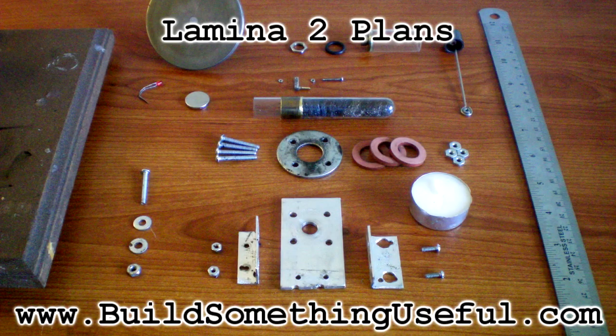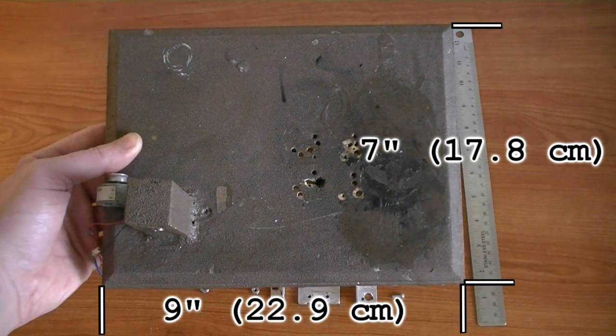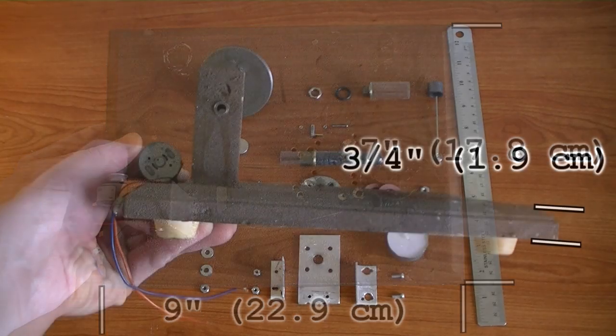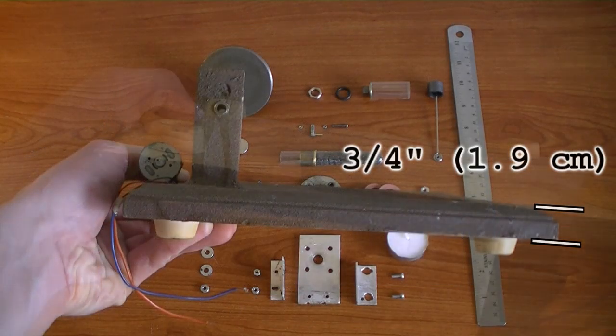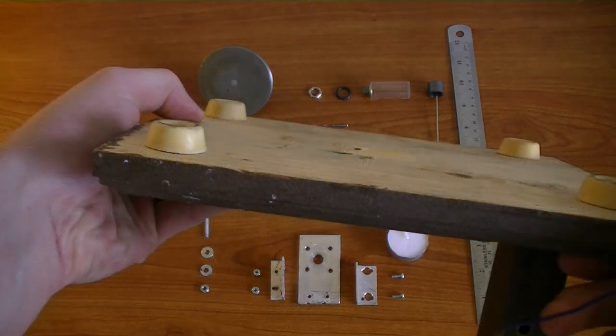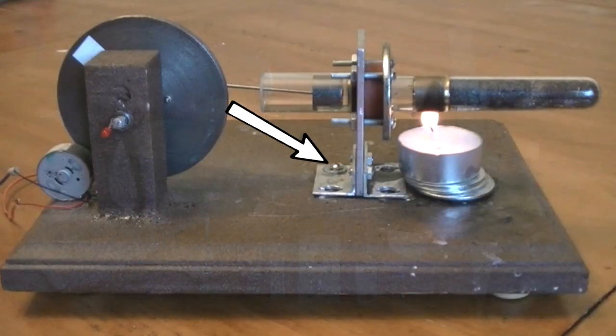This is the lamina 2 plans video. The base measures 9 inches by 7 inches and is about 3 quarters thick. The rubber feet on the bottom of the base keep any surface the engine is on from being scratched by the one bolt that runs through the base.